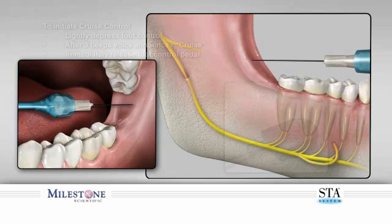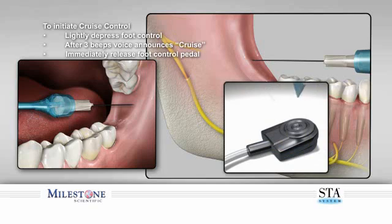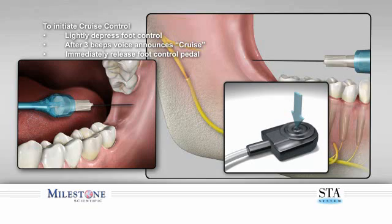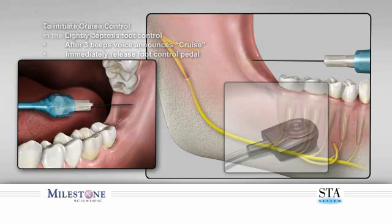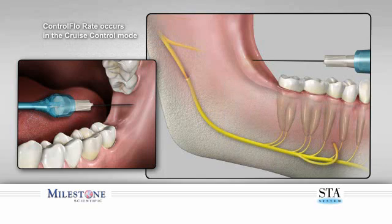To initiate the injection using cruise control, slightly depress the foot control. After three beeps, you will hear the STA system announce 'cruise.' Immediately release the foot control pedal to enter cruise control mode. This allows the control flow rate to continue to dispense anesthetic solution, creating an anesthetic zone in front of the tip of the needle.